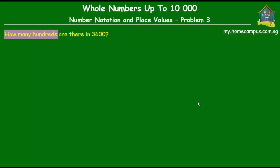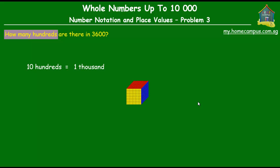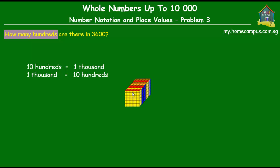We know that ten hundreds can be grouped together into one thousand. The opposite is also true: if we have one block of a thousand units, we can break it up into ten hundreds. So one thousand is equal to ten hundreds.